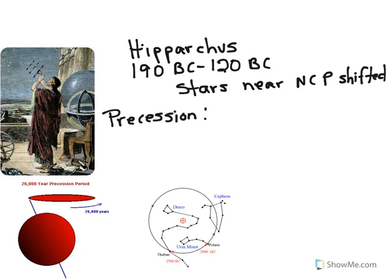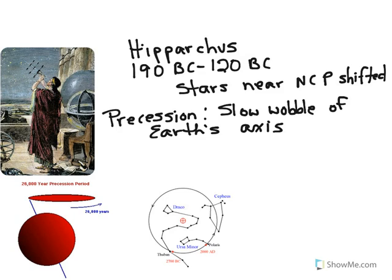And we now know that it's not the stars that actually move, but it's the Earth. Precession is the slow wobble of Earth's axis. And that's what's illustrated here. Slow, very, very slow. It takes 26,000 years to go through one wobble cycle.